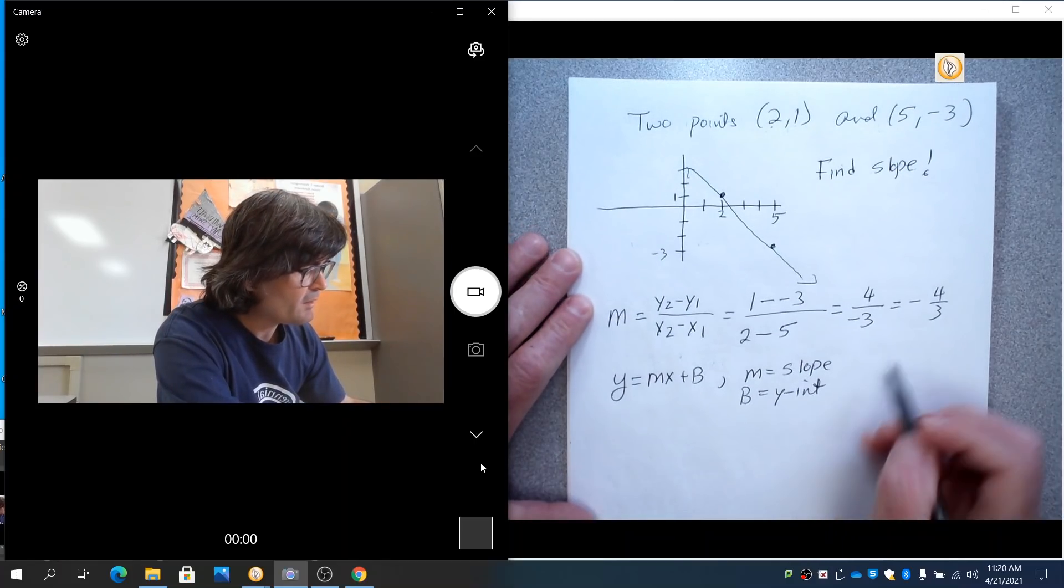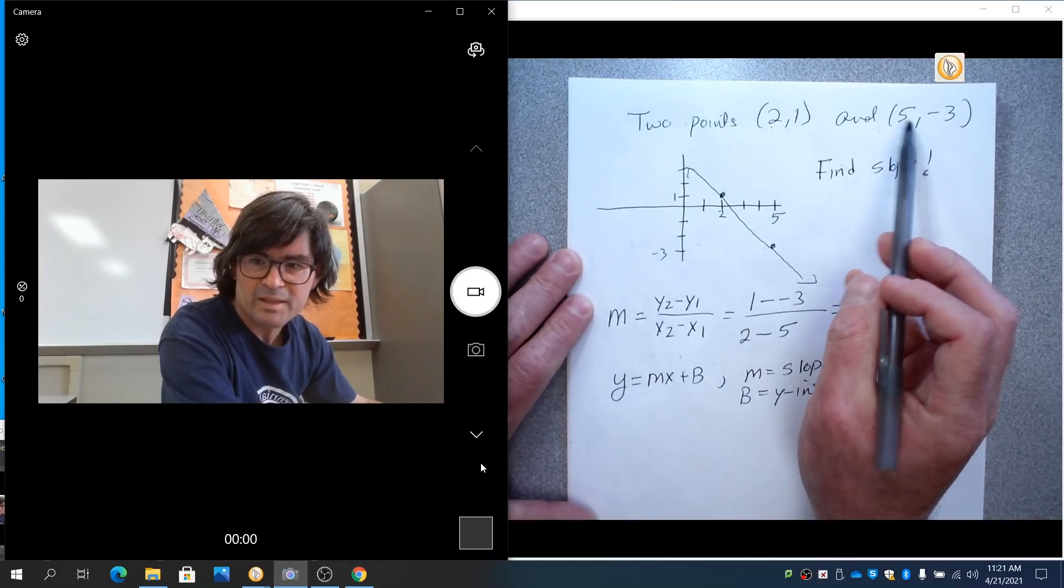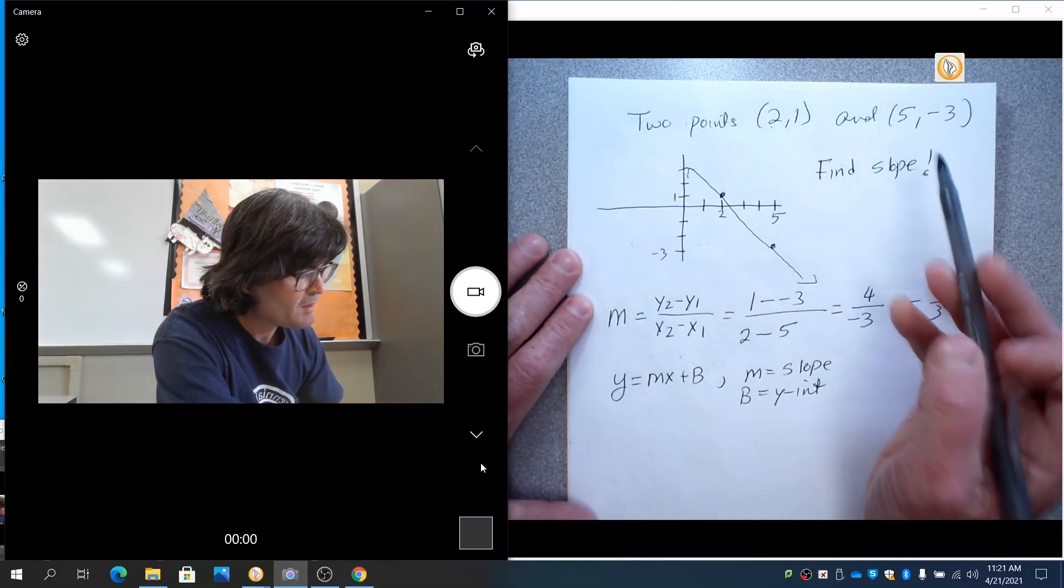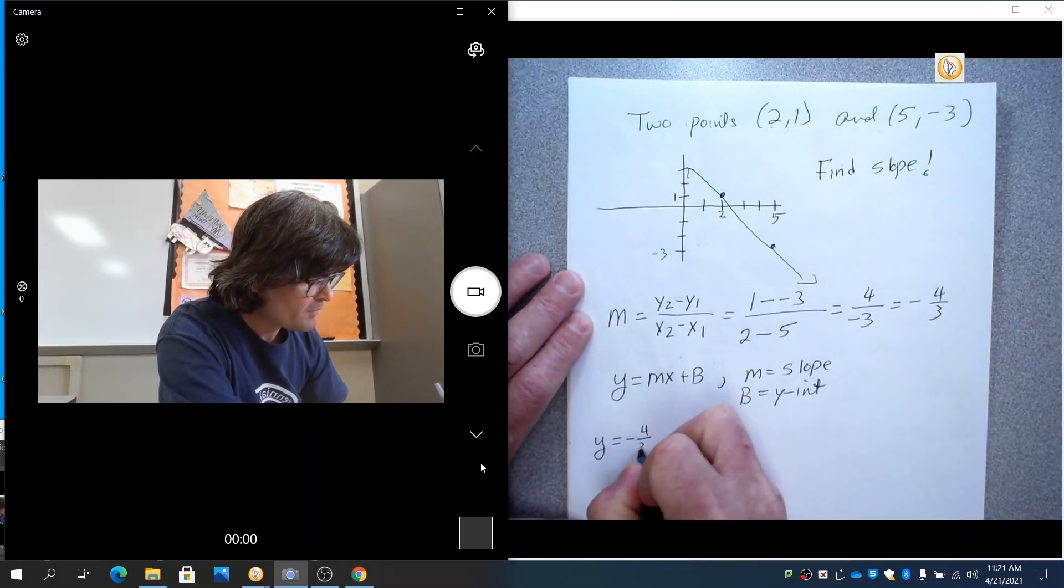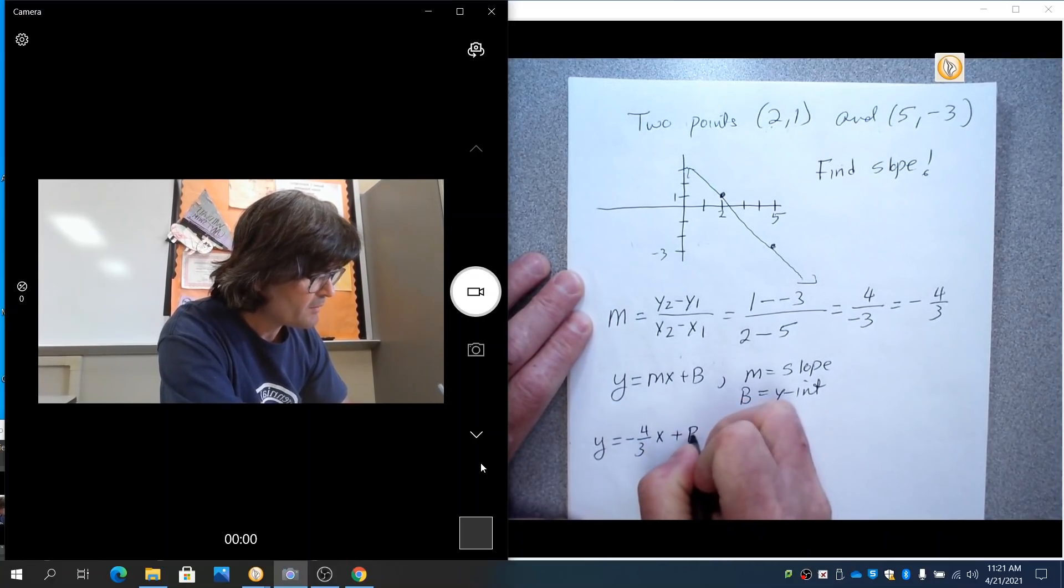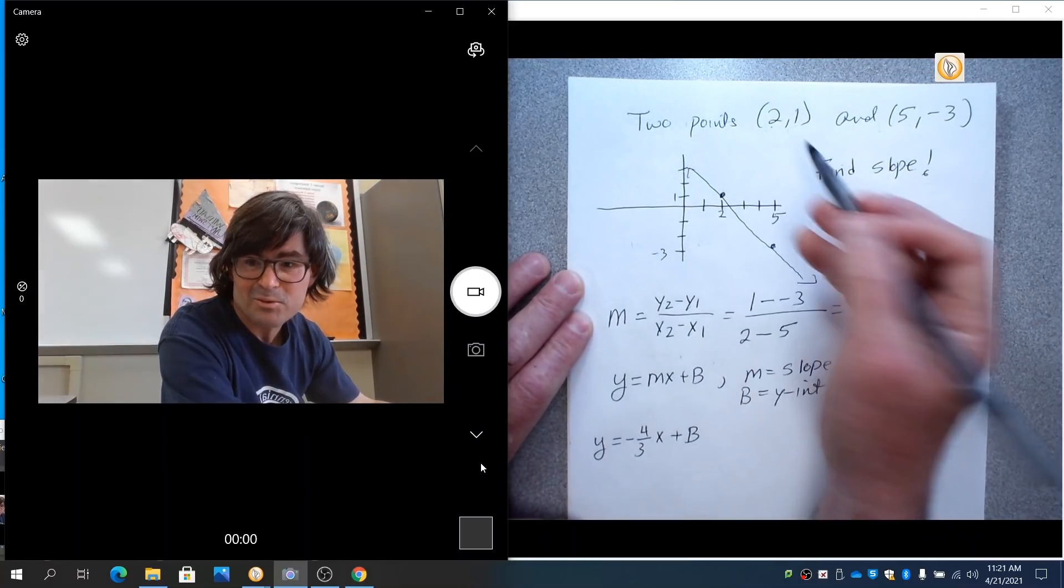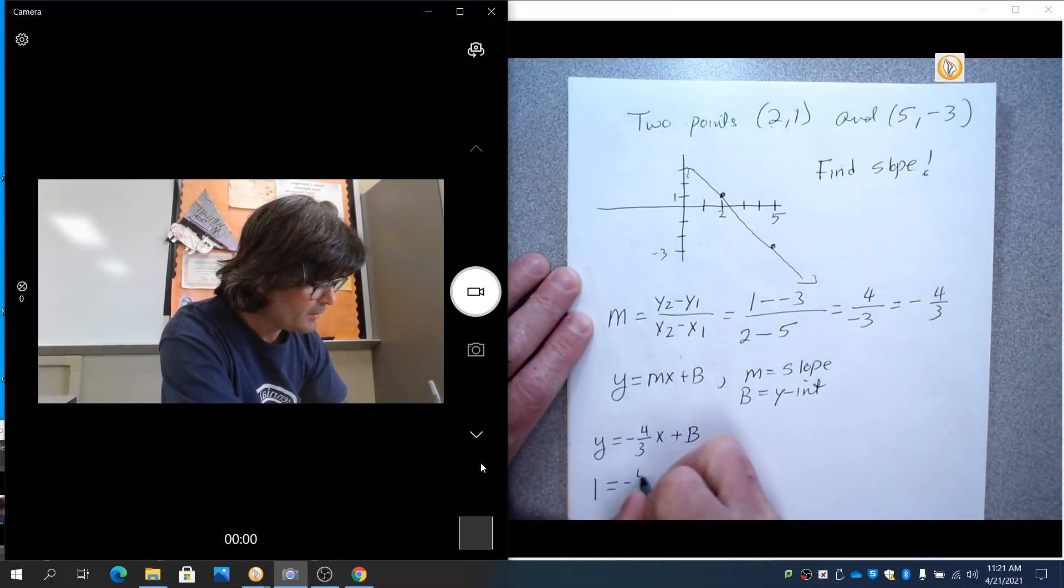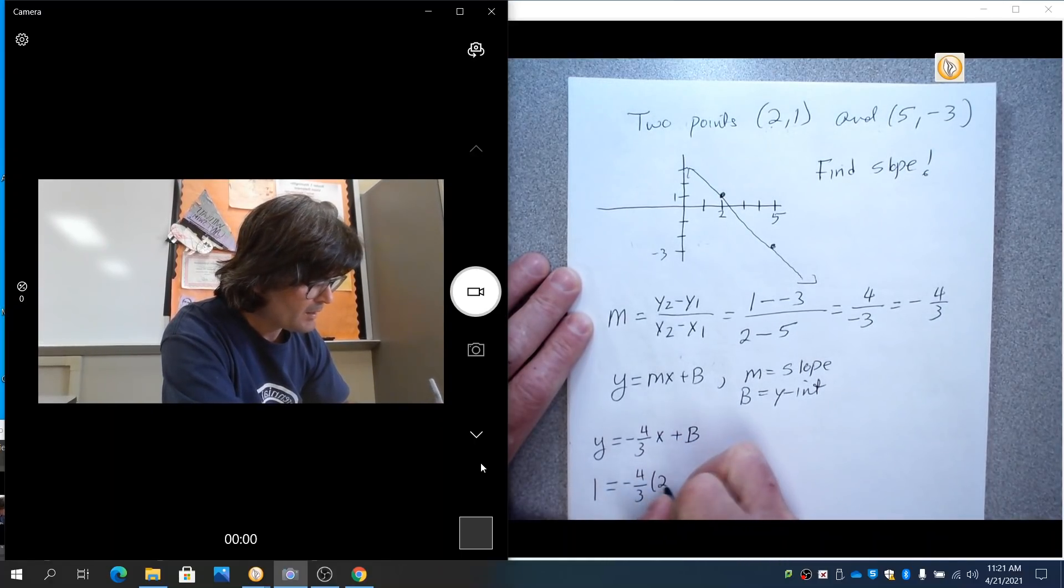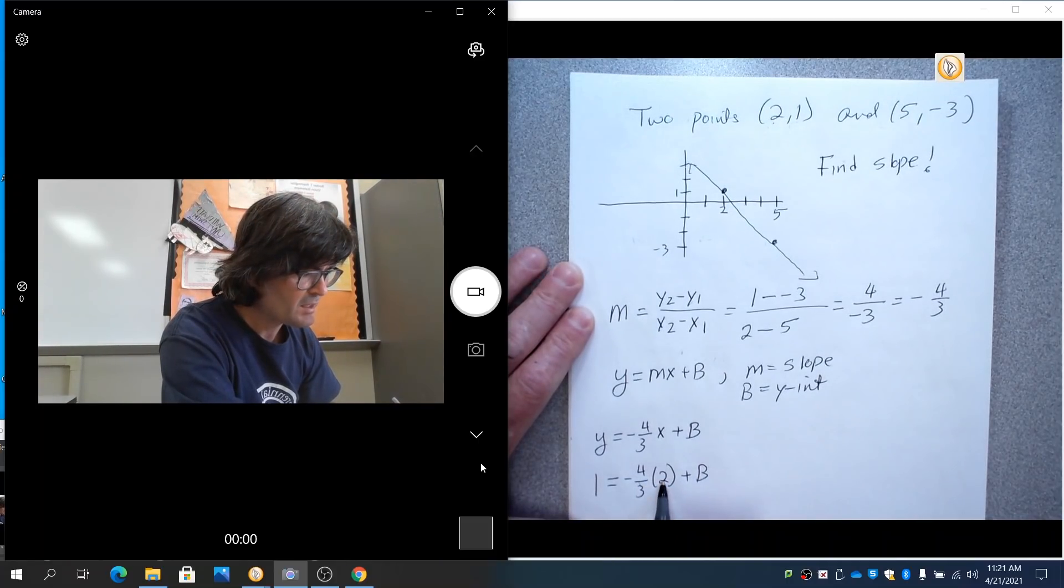So I'm going to plug in minus 4 thirds. Then I'll pick one of these two points. It doesn't matter which one. Put in the X. Put in the Y. Solve for B. So Y equals minus 4 thirds X plus B. Put in X is 2. Put in Y is 1. I'm picking this one because the numbers are smaller and they're positive. I like positive. I like small. That's my preference. So I put in my slope. I put in my X. I put in my Y.